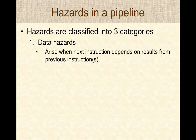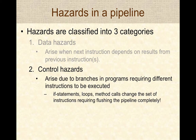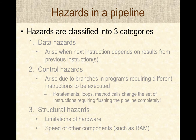There are three types of hazards. The first is a data hazard, arising from dependencies between instructions — one instruction needing a result from a previous one. The second is a control hazard, arising from branches, if-statements, loops, and method calls that change the set of instructions to be executed. The third is a structural hazard, arising from hardware limitations or the speed of hardware components.